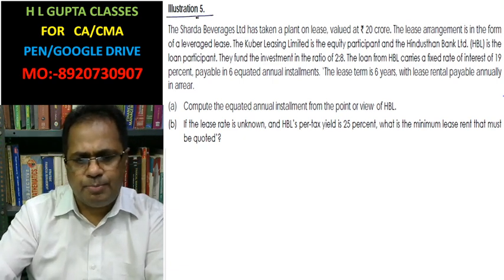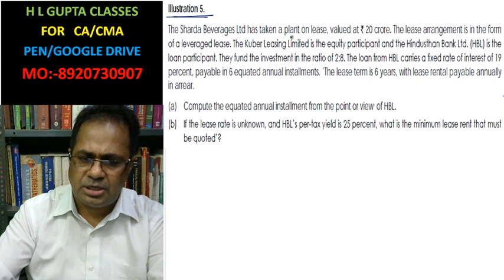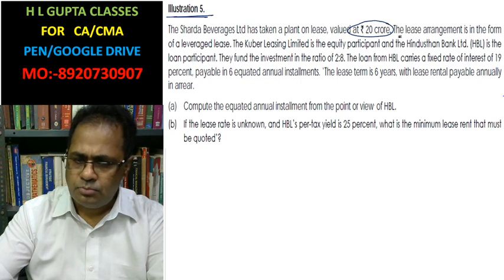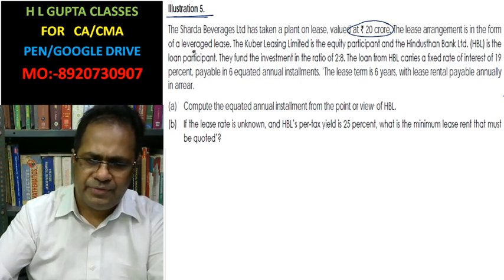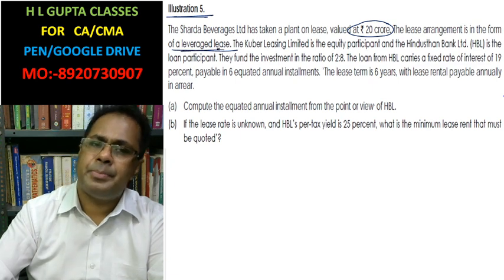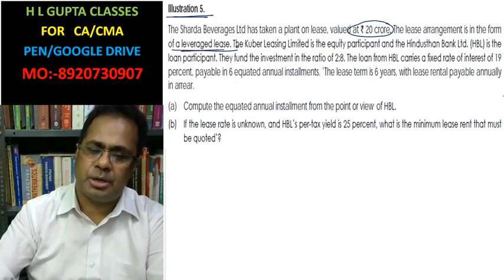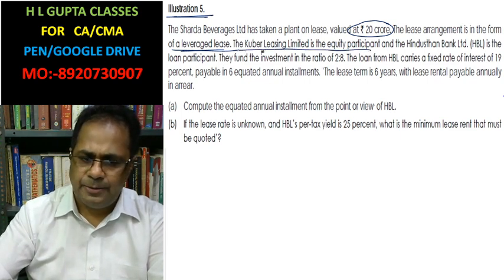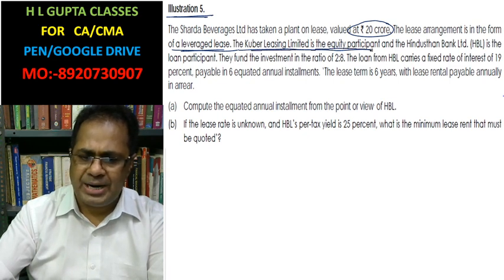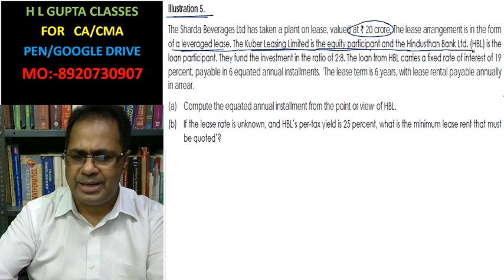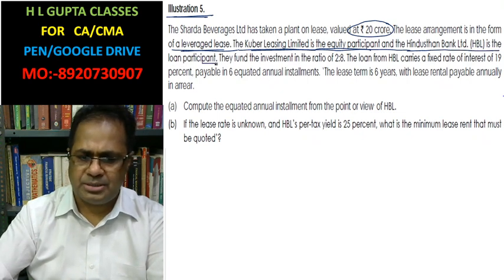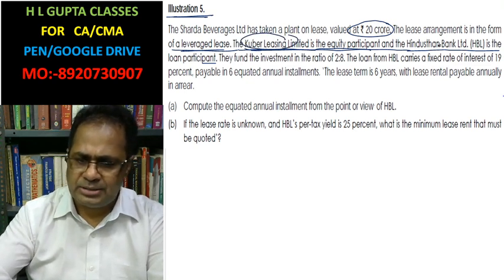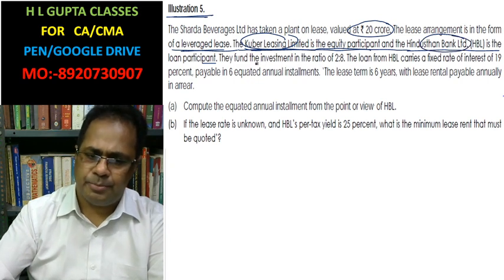In this illustration, Sarda Vibraise Limited has taken a plant which is valued at rupees 20 crore. The lease arrangement is in the form of a leveraged lease — most of the capital is taken from a loan. Kubert Leasing Limited is the equity participant and Hindustan Bank Limited is the loan participant. Kubert is a leasing company and Hindustan Bank Limited is the loan provider.